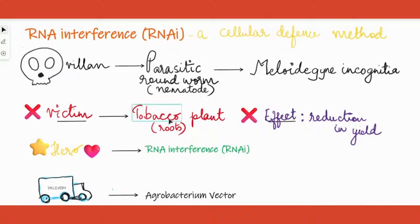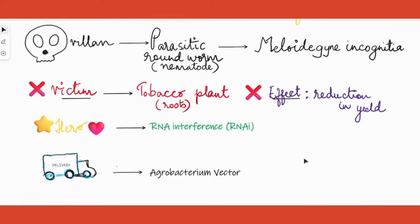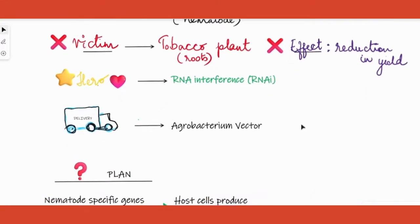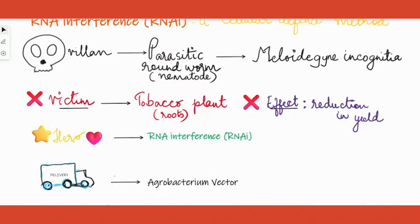Tobacco plants are attacked by a parasitic roundworm called Meloidogyne incognita — please get the spelling right. When they attack the tobacco plant, it reduces the yield. In order to overcome this problem, we use a method called RNA interference, and the delivery agent in our whole story is Agrobacterium.